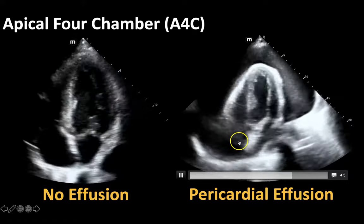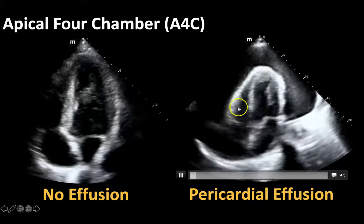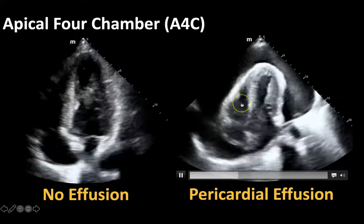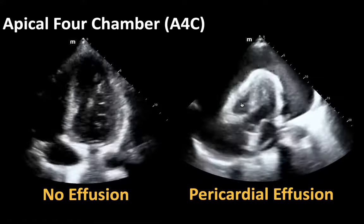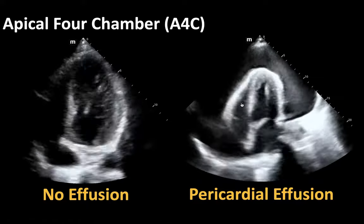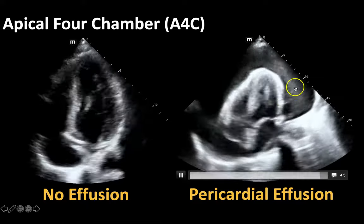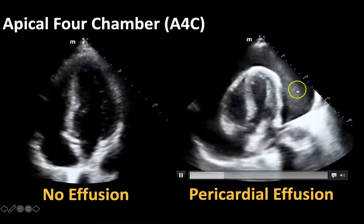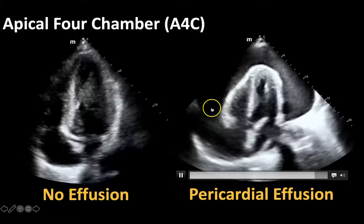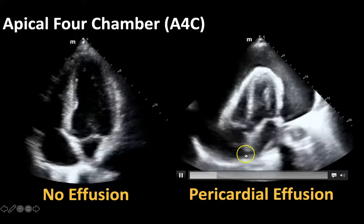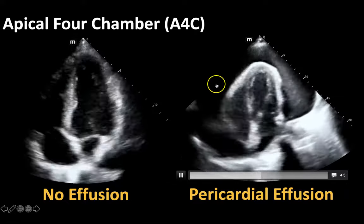Your left atrium, your left ventricle, your right atrium, and your right ventricle. But you'll notice that this scan looks a lot different from the one on the left side of the screen because now we can appreciate this large pericardial effusion all the way around the heart circumferentially.